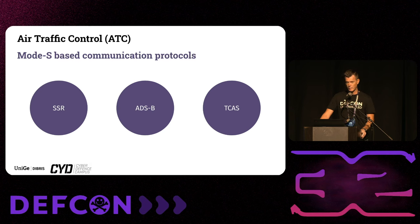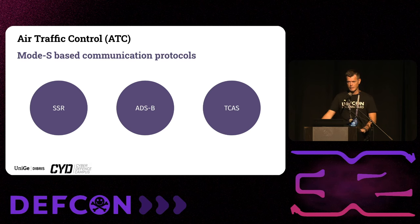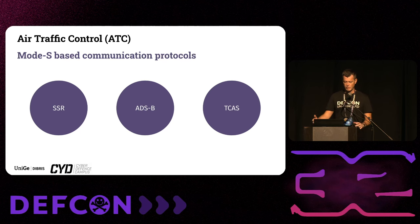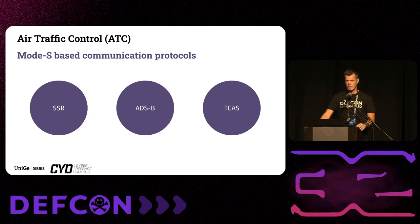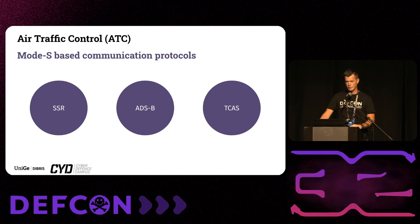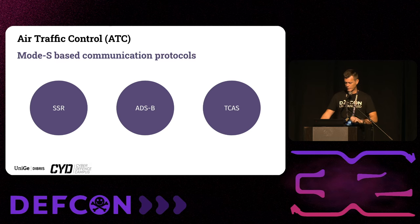All three technologies are based on Mode-S. Mode-S is a data frame format similar to IP in the internet, that allows for wireless communication between aircraft and ground stations. The first technology is Secondary Surveillance Radar, called SSR. The second one is ADS-B, and the third one — which will be the main focus of this presentation — is the Traffic Collision Avoidance System.